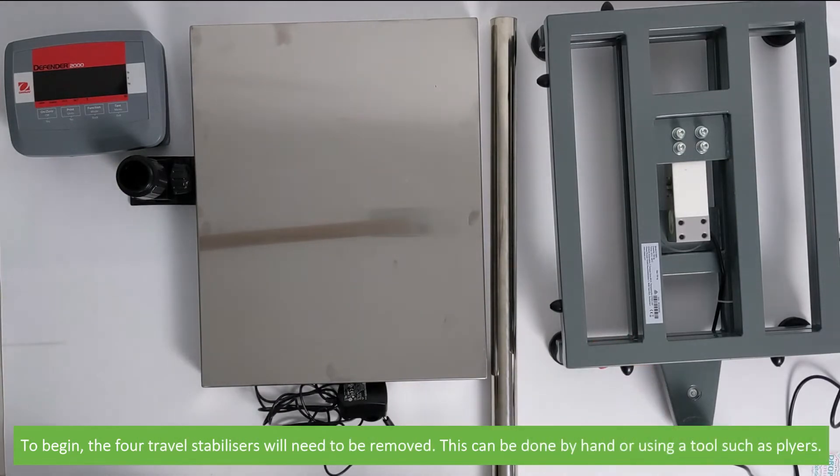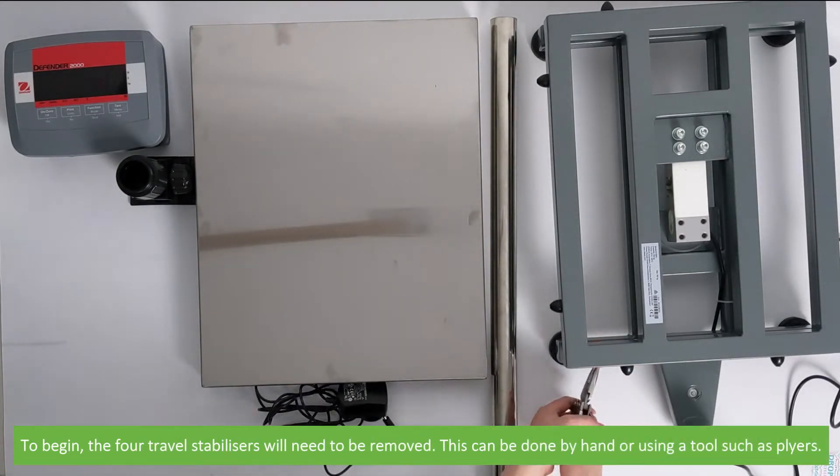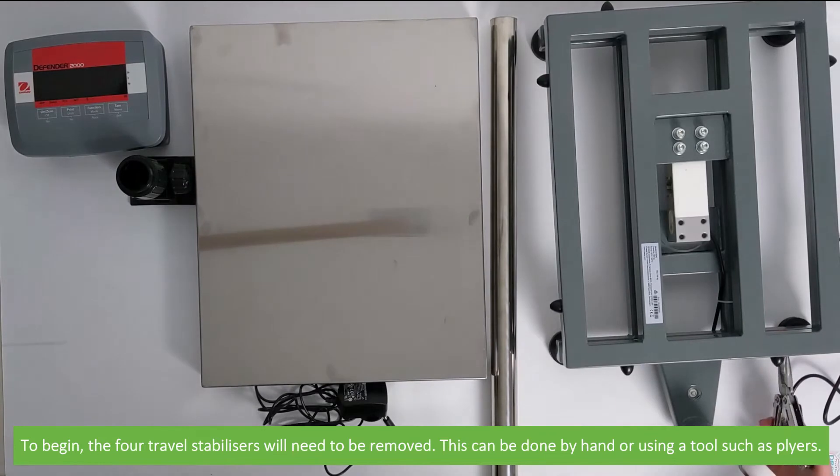To begin, the four travel stabilizers will need to be removed. This can be done by hand or by using a tool such as pliers.